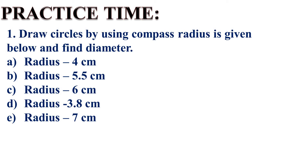Now, it is practice time. Draw a circle by using compass. Radius is given below and find the diameter. A: radius 4 cm. B: radius 5.5 cm. C: radius 6 cm. D: radius 3.8 cm. E: radius 7 cm. आपको scale से radius measure करना है, compass से circle draw करना है, उसके बाद diameter पता चल जाएगा. और diameter = 2 × r formula लगाके multiply करके check कर सकते हैं. We will meet in the next video with next content.